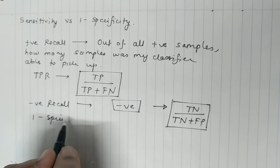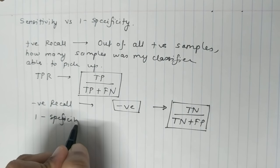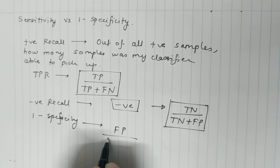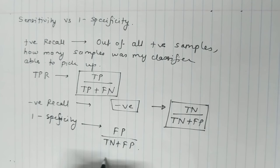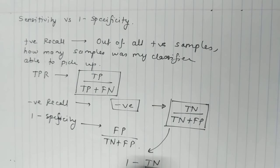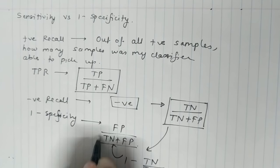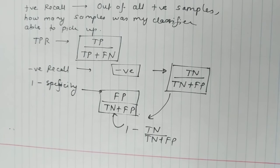When you calculate one minus specificity, the value turns out to be FP upon TN plus FP. This is simple maths. I take this term, one minus TN upon TN plus FP. The denominator goes up, TN is subtracted and you're only left with FP. So I hope the values are very clear to you about what sensitivity and specificity are.